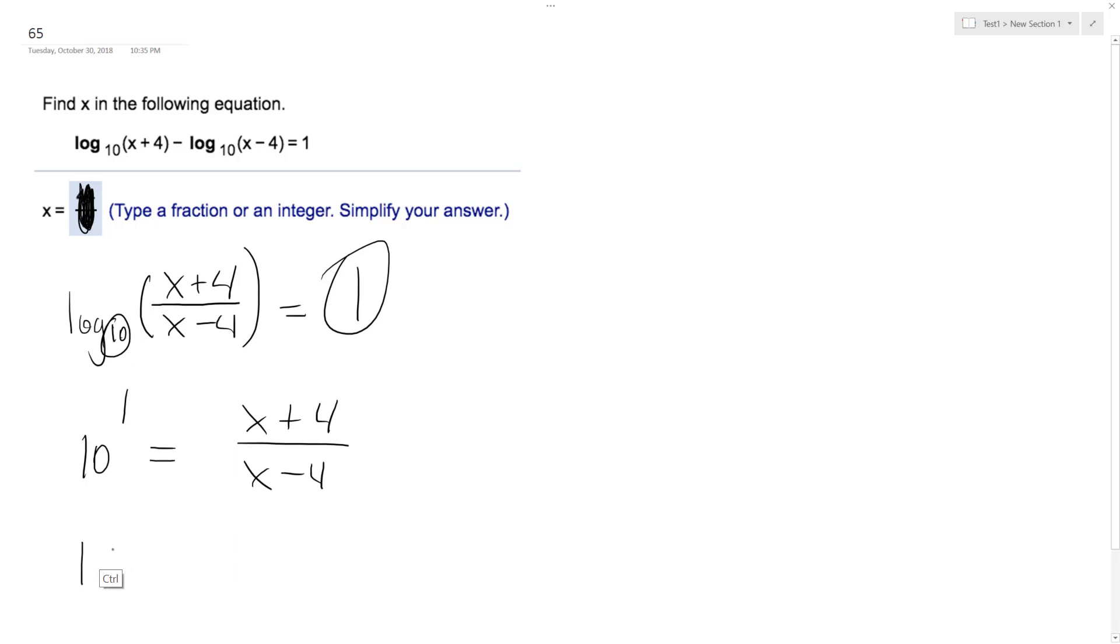It's basically this, I'll just show you. So 10 times x minus 4 and then x plus 4. I multiplied both sides by x minus 4. So this goes over here. I get 10x minus 40 is equal to x plus 4, minus x minus x. Add 40 to both sides.